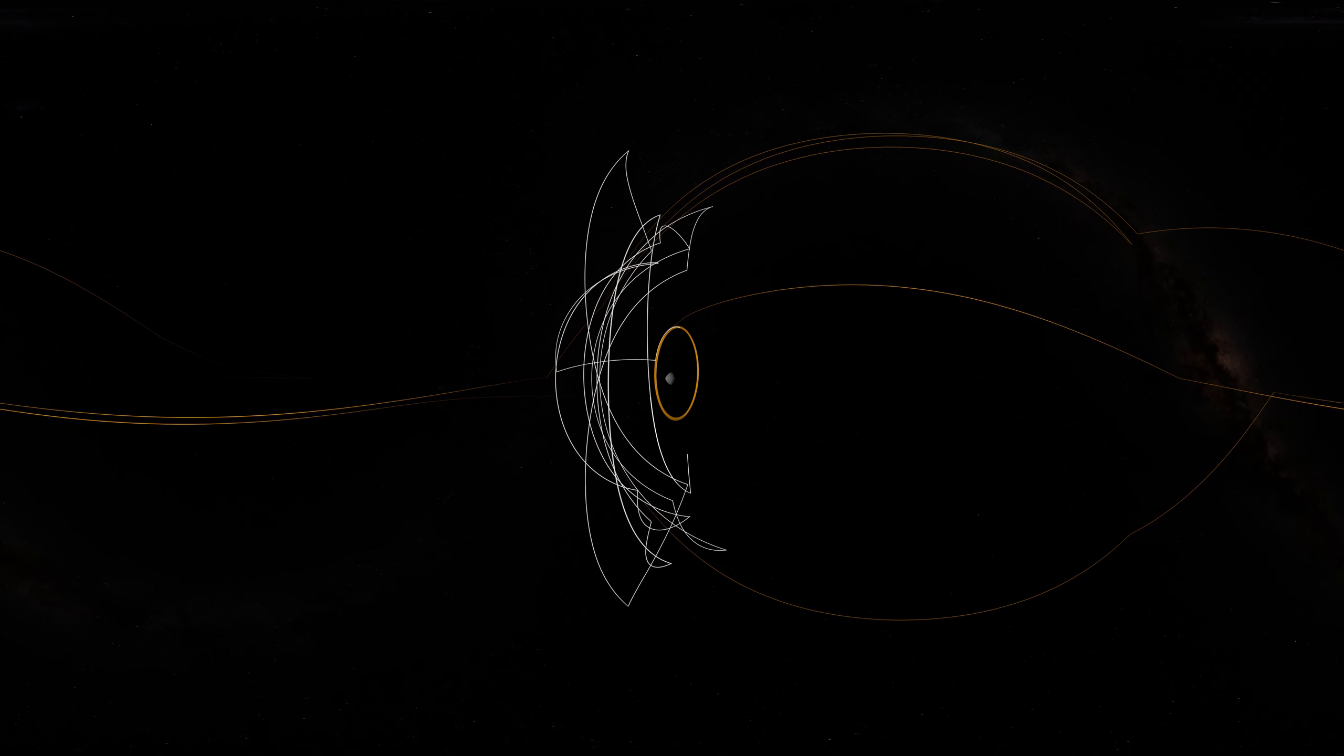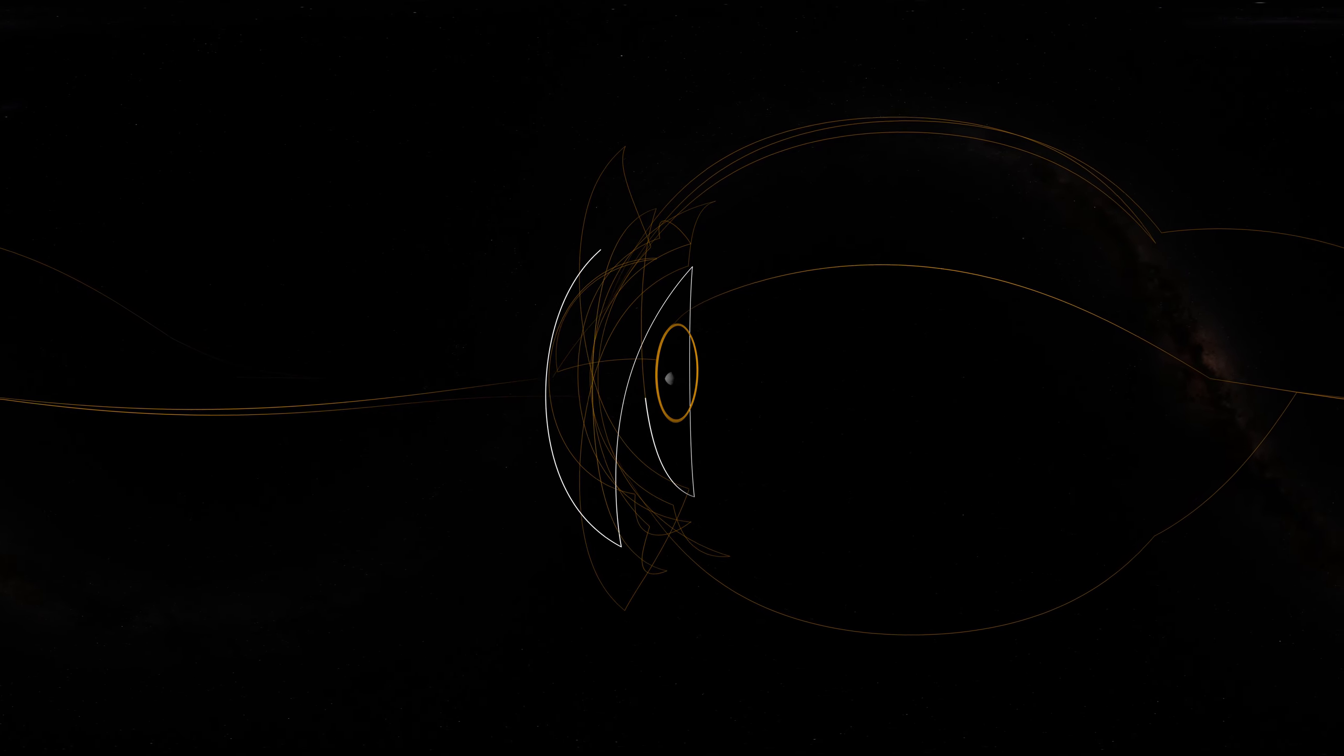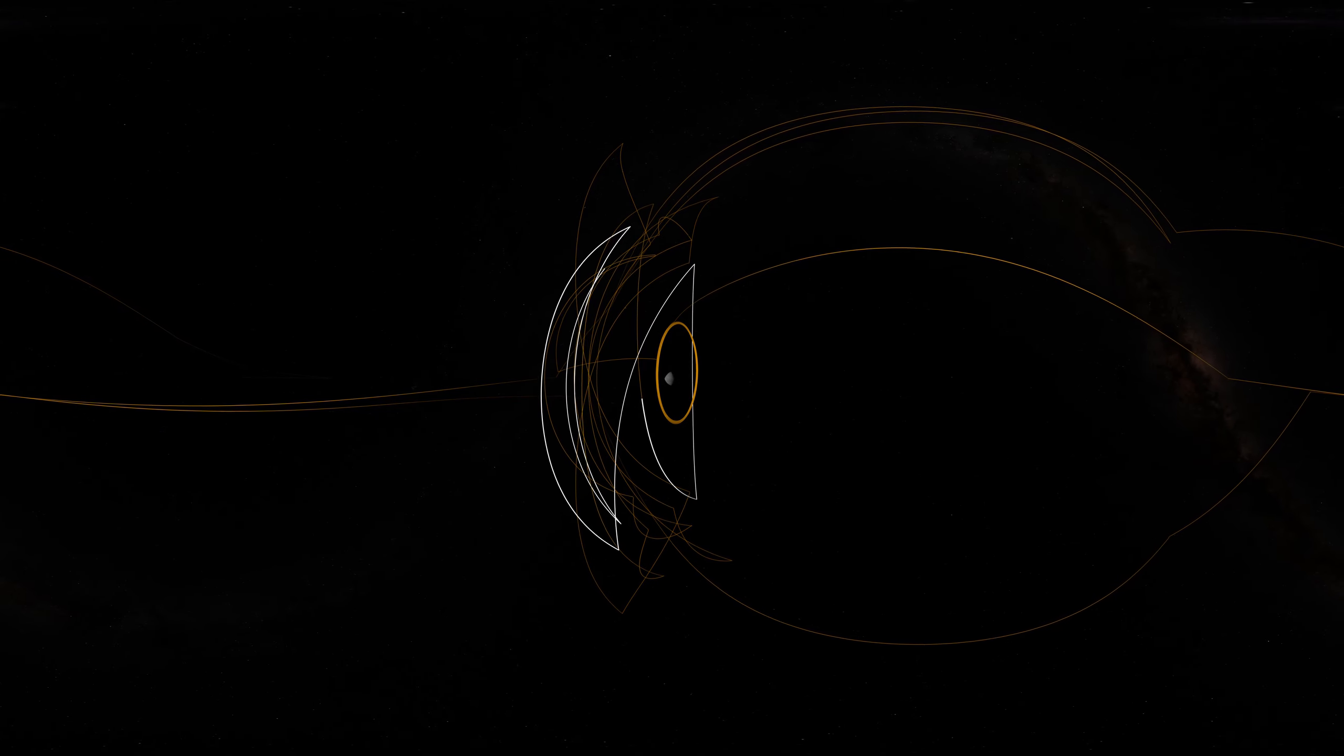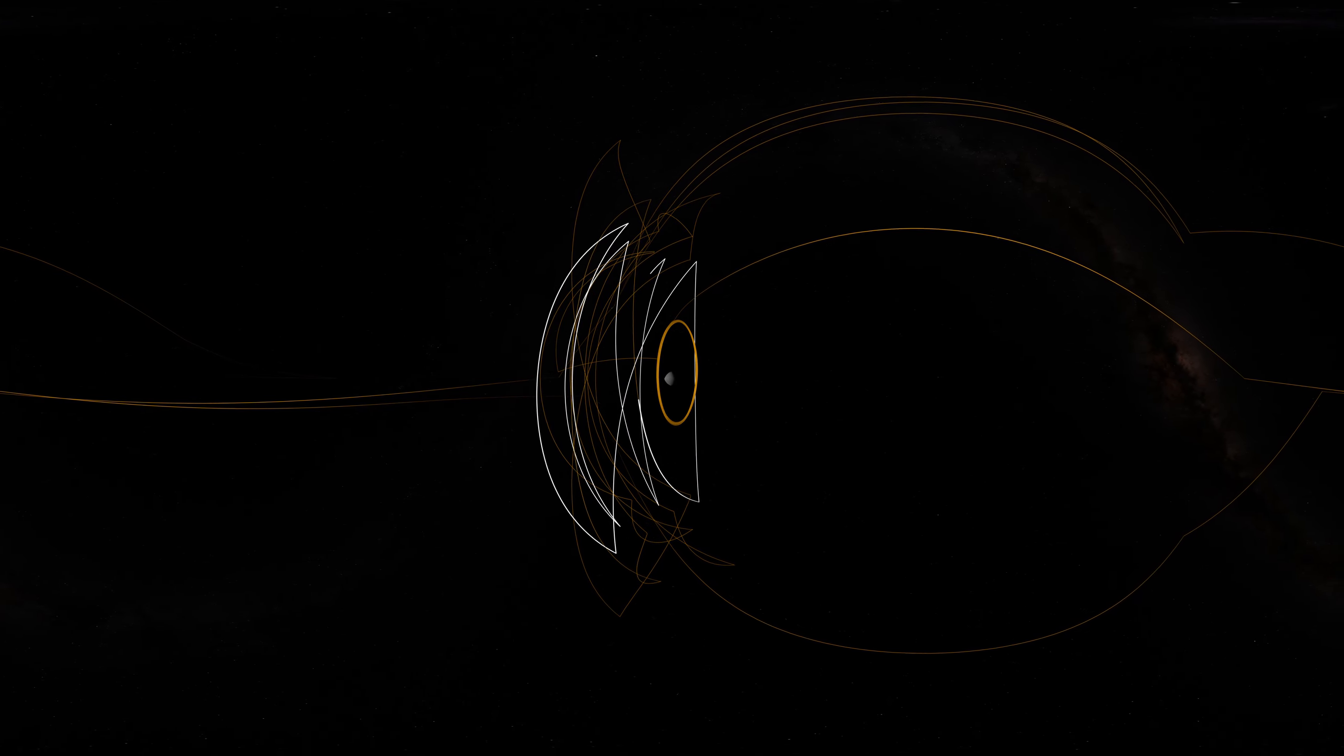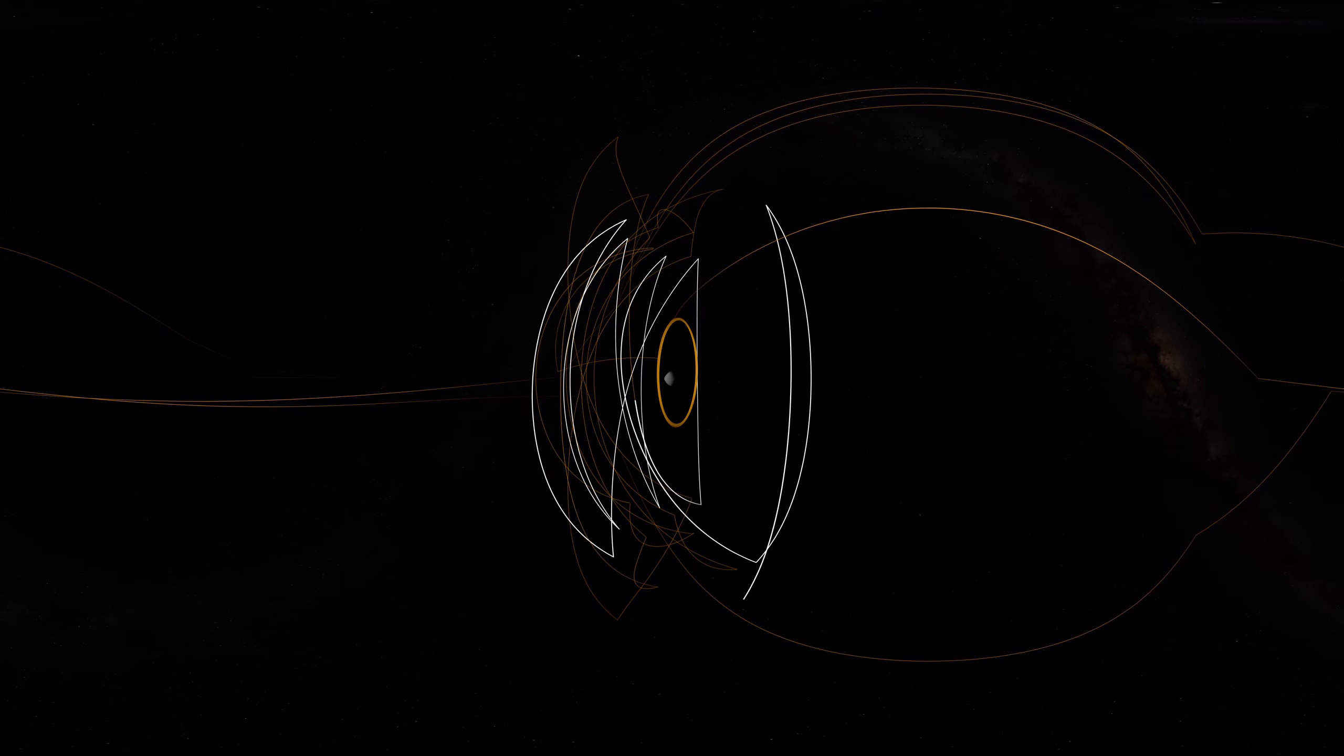During the detailed survey, OSIRIS-REx globally mapped Bennu at only 5 centimeters per pixel, the highest resolution of any planetary body, including Earth.